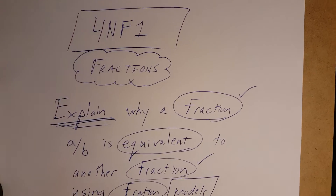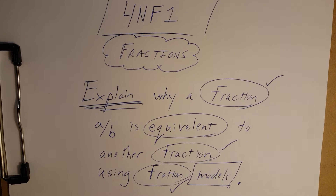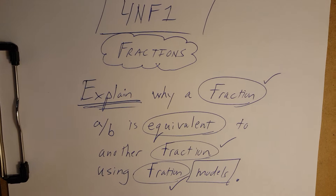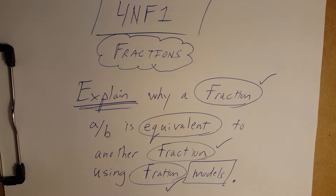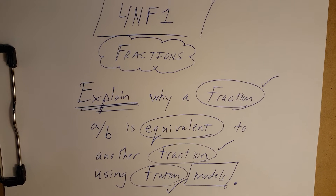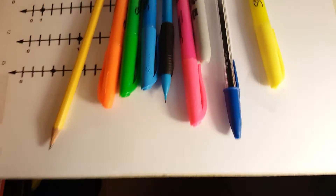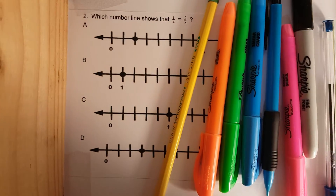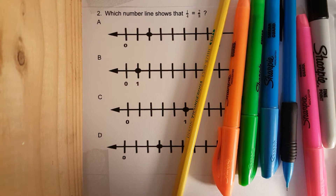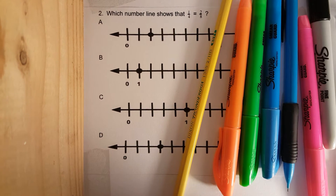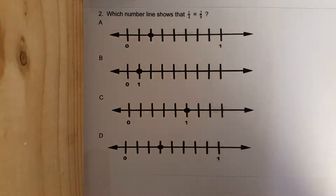Let's go for F1 fractions: explain why a fraction a over b is equivalent to another fraction using fraction models. Yesterday we had a model that looked like a rectangular cake. Today the model is going to be a number line. Let's set it up — there are all our marking materials, which is more than enough.